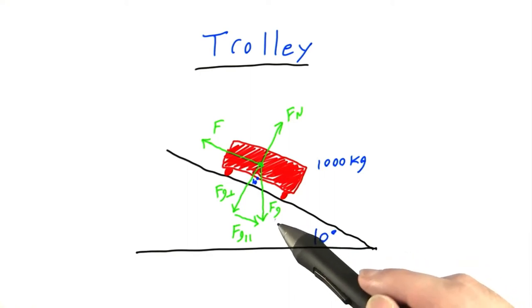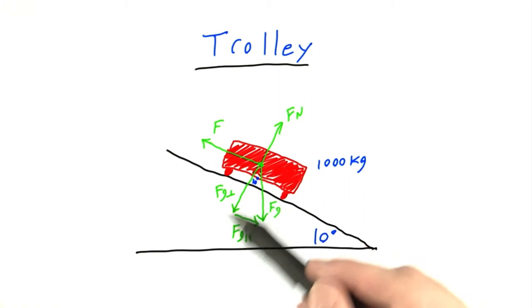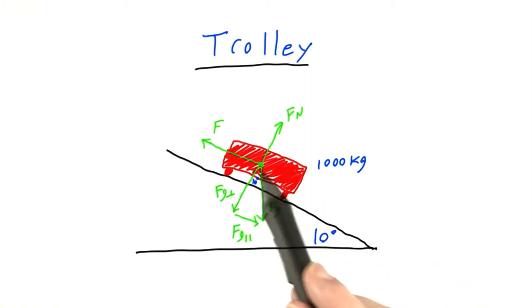And as we've done in the past, we can break down the force of gravity into components that are parallel to the incline and perpendicular to the incline. And you'll remember that this angle here is the same as this angle here. So they're both 10 degrees.